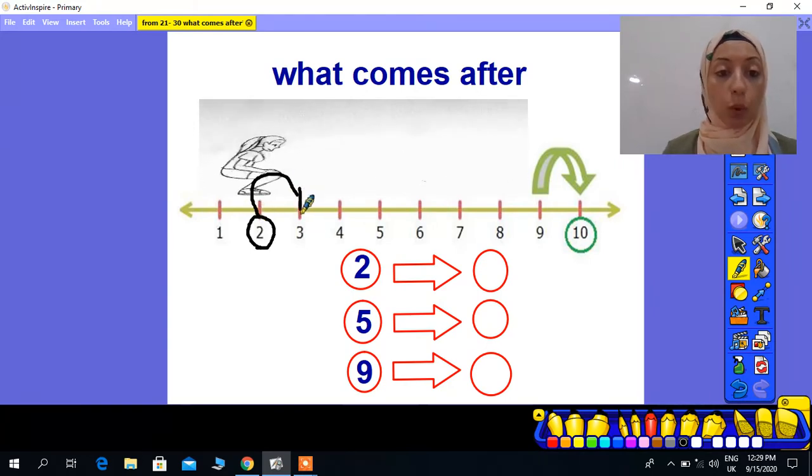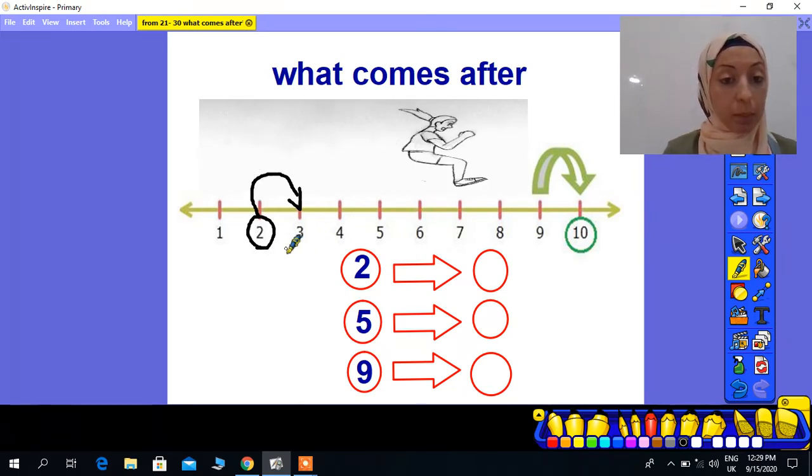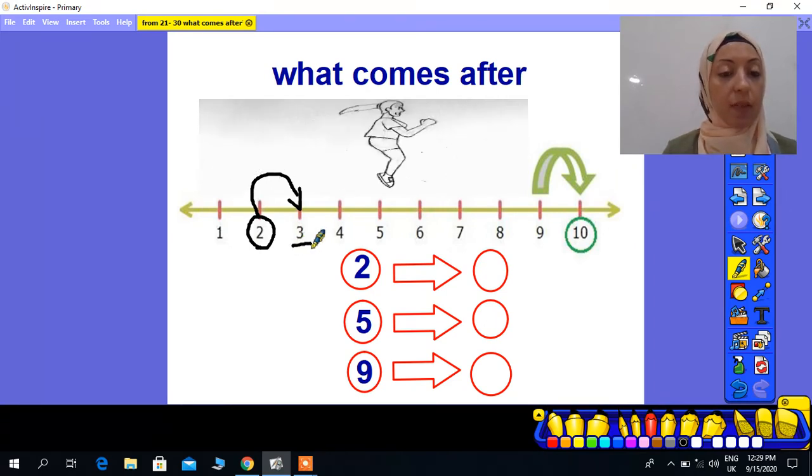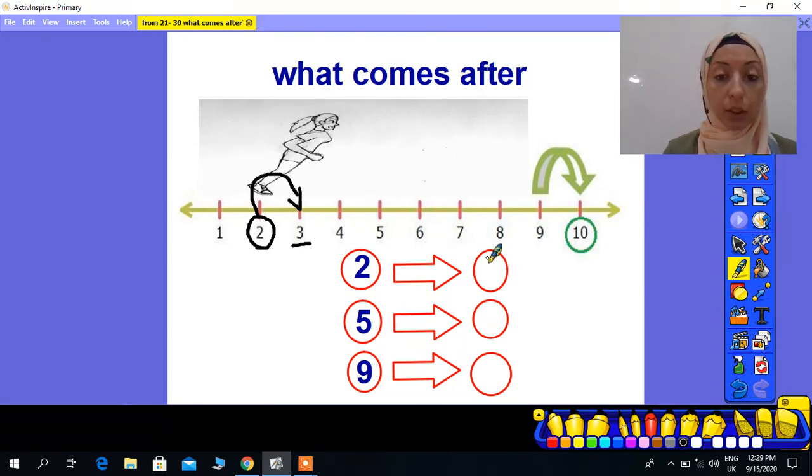If I want the number after, I'll move or jump one step to the right on the numbers line. So what is the number after 2? Three. So here, what comes after 2? Three. I will write number 3. Super, KG2.